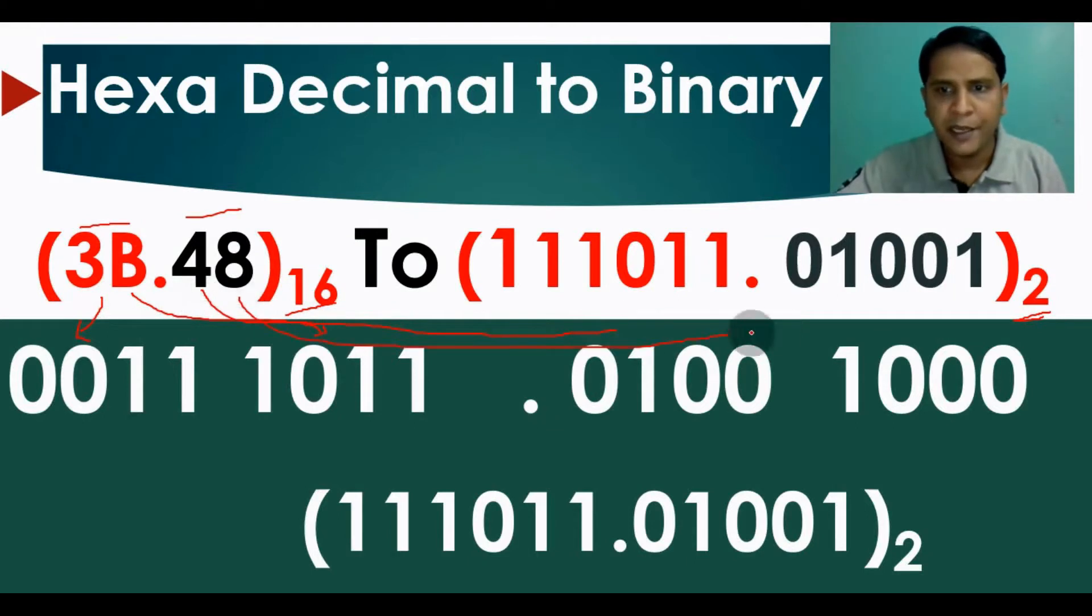And 8 can be written as 1000. Now if you write it together, this will become 1011 and this will become 11. You need not write this leading 0.